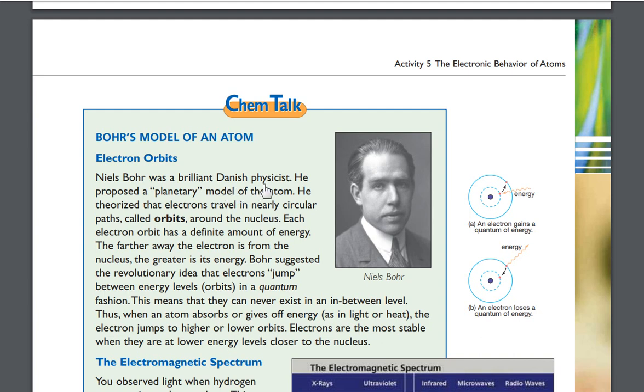Niels Bohr was a brilliant Danish physicist. He proposed a planetary model of the atom. He theorized that electrons travel in nearly circular paths called orbits around the nucleus. Each electron orbit has a definite amount of energy. The farther away the electron is from the nucleus, the greater is its energy. Bohr suggested the revolutionary idea that electrons jump between energy levels, orbits, in a quantum fashion.